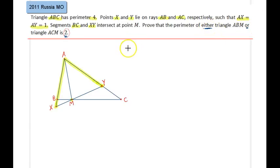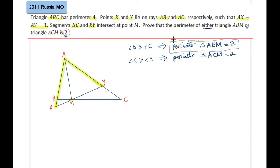It is basically telling you that if angle B is greater than angle C, then it must be that the perimeter of triangle ABM is equal to 2. In the other opposite case where angle C is greater than angle B, then it really means that the perimeter of triangle ACM is the one which is actually 2. Let me solve this problem for this particular orientation, where angle B is larger than angle C. Therefore I would like to show that the perimeter of triangle ABM is actually equal to 2, that's the result that I would like to prove.